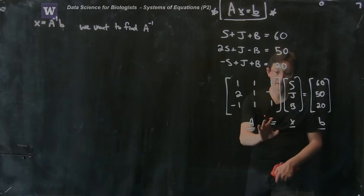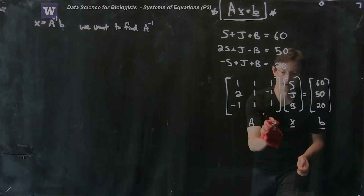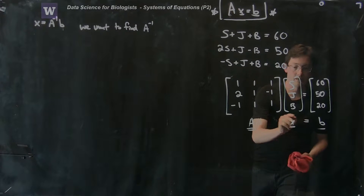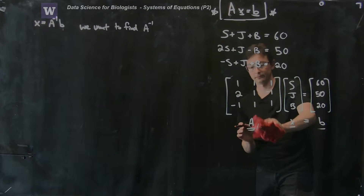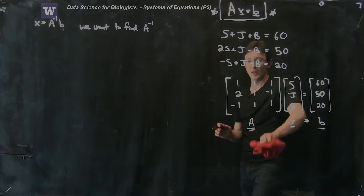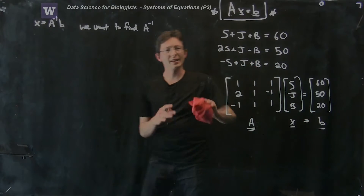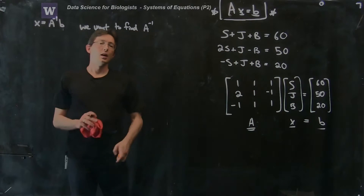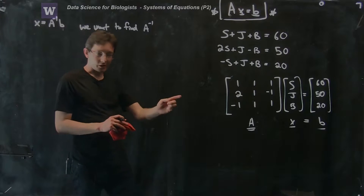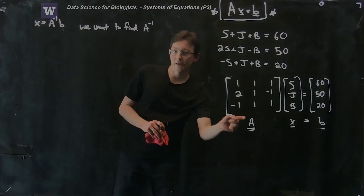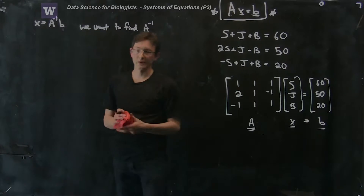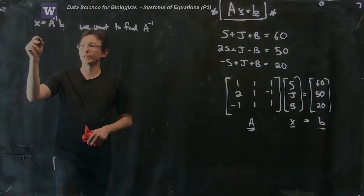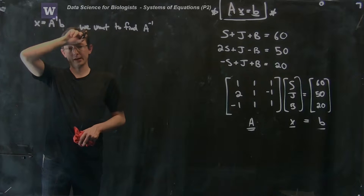Now A times X equals B. That's a perfectly fine way to write things. But if I actually want to solve for the inverse of A, there's a more useful way to do this.